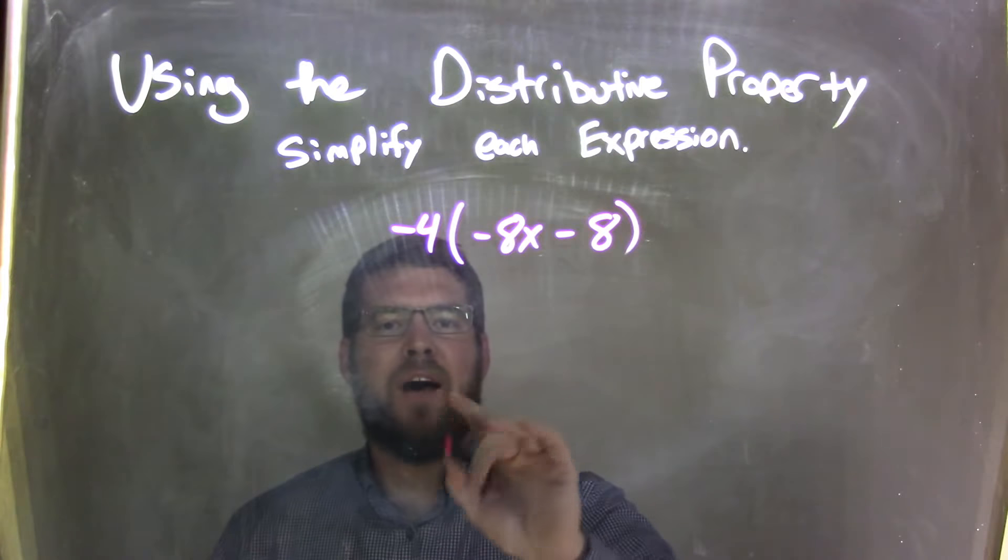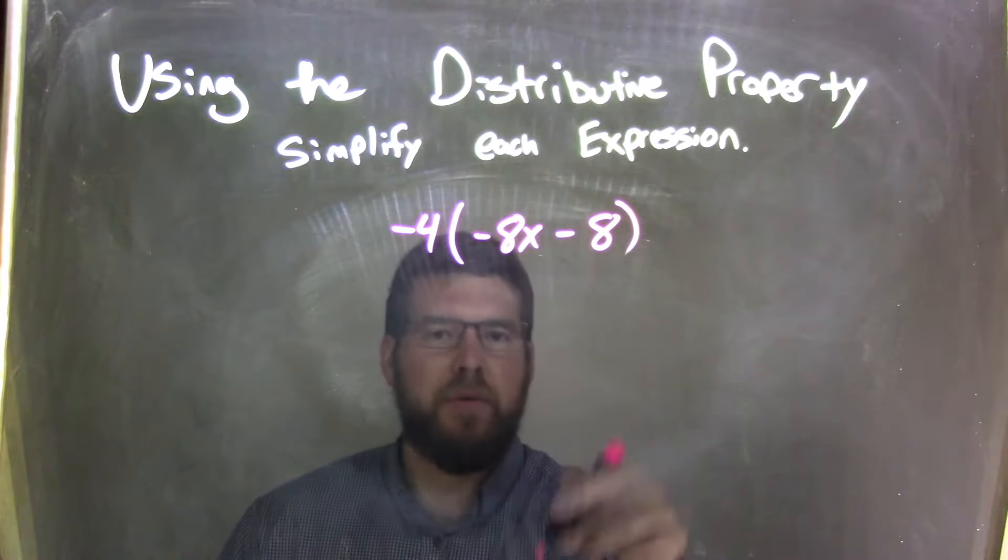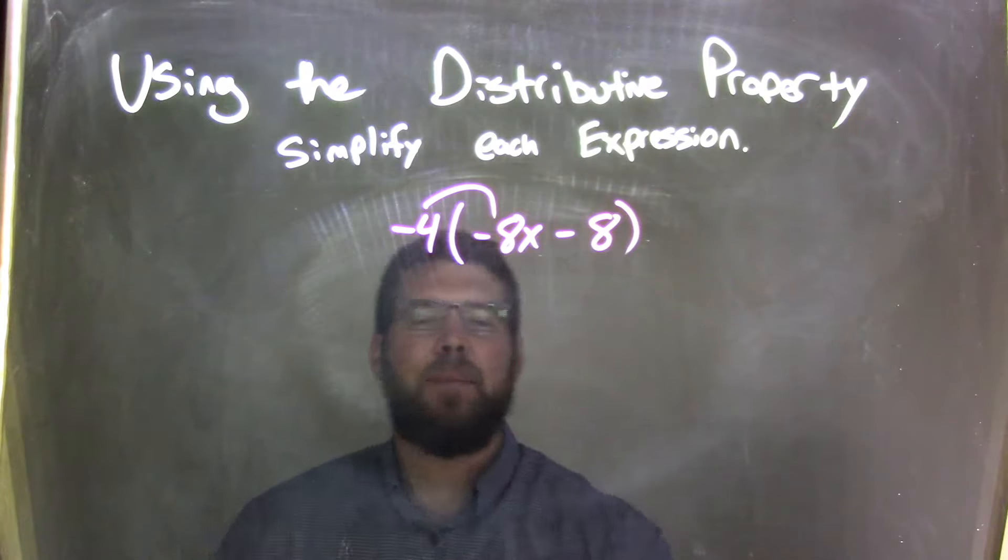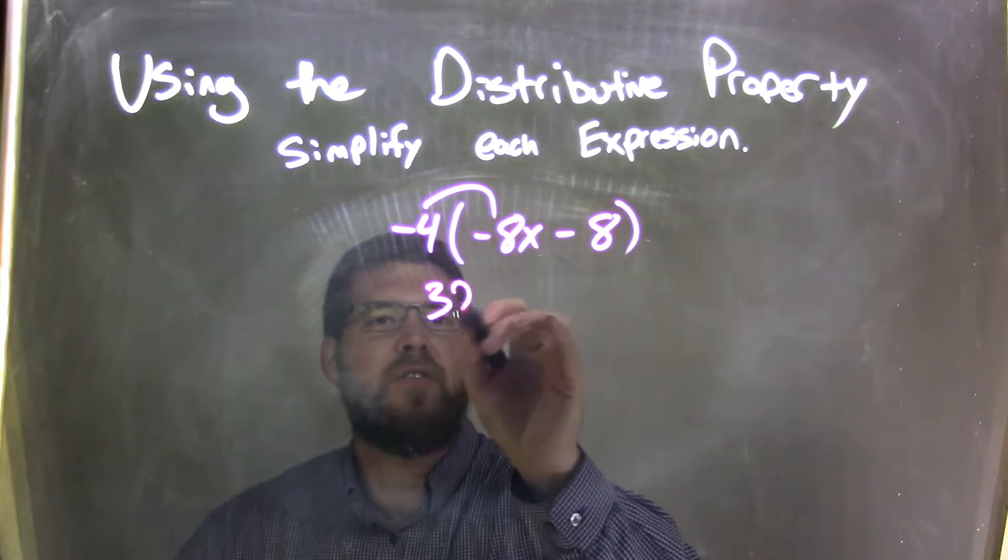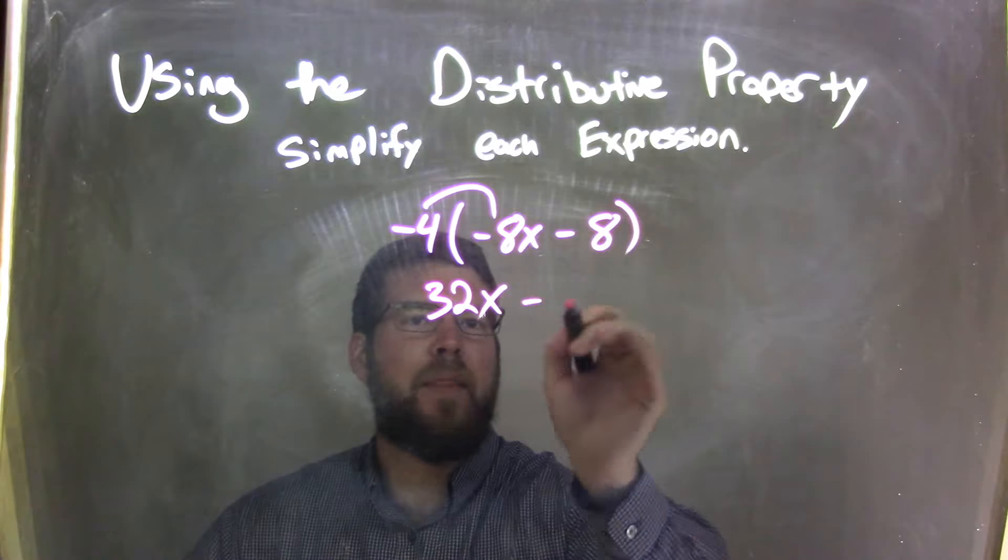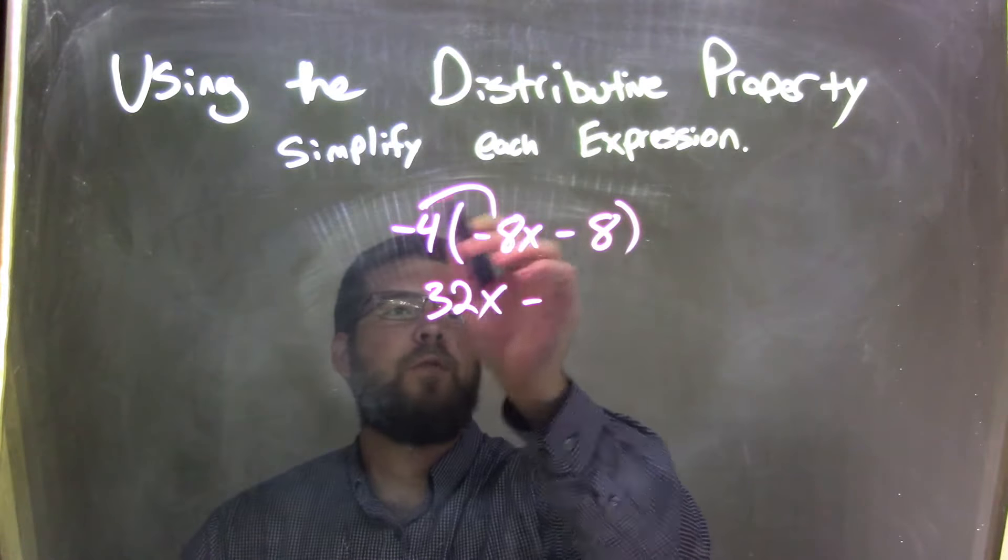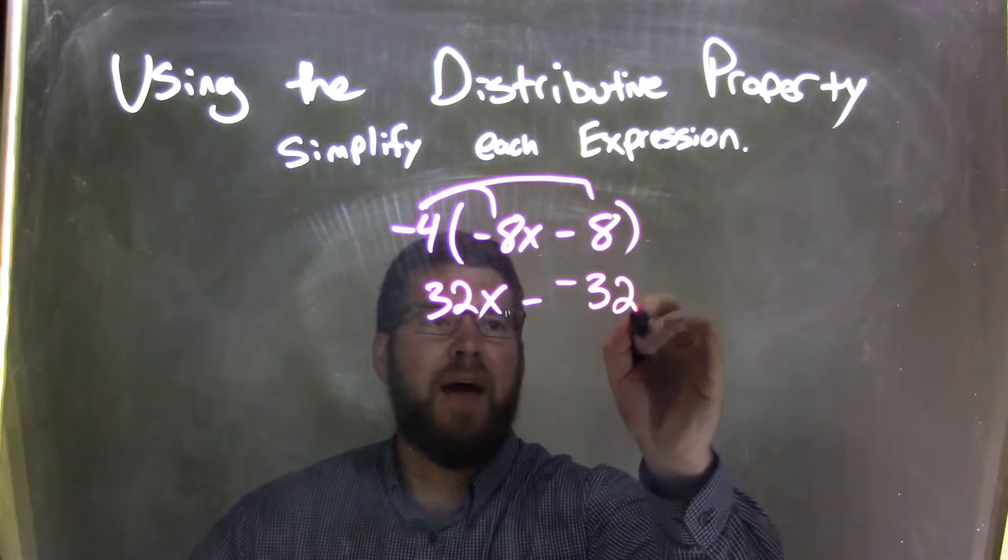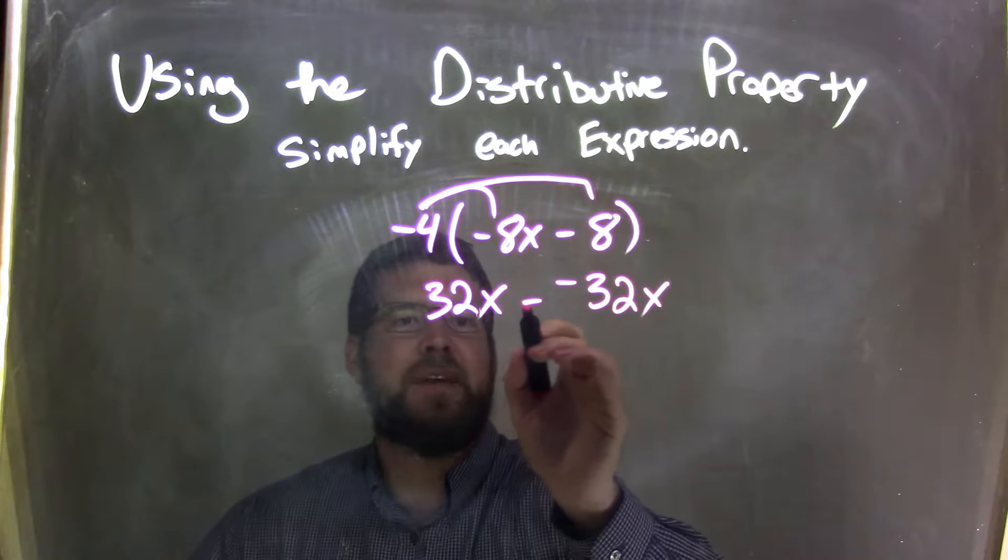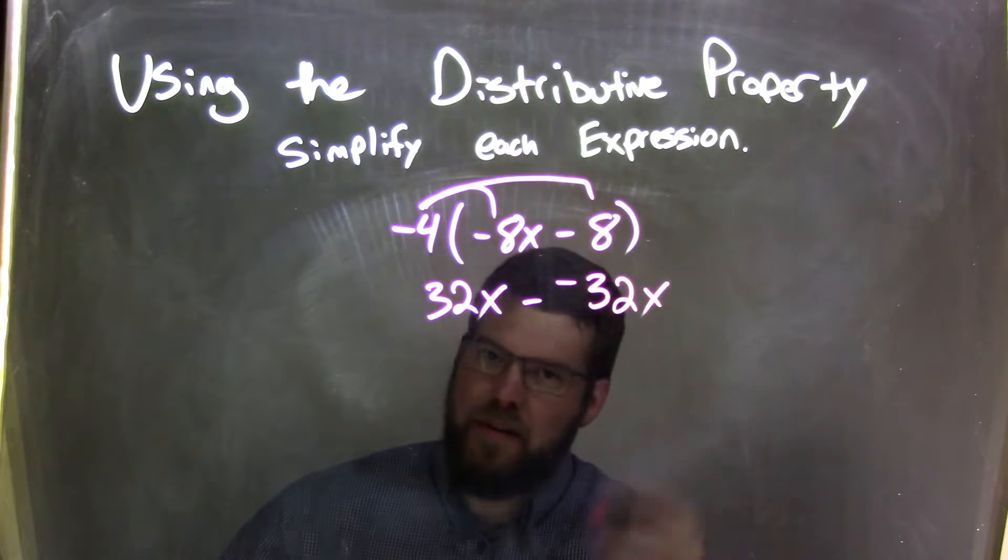So now we have negative 4 on the outside, and we need to multiply that and distribute that in. Negative 4 times negative 8, two negatives make a positive, which is 32x. Bring down the minus sign here. Now we have negative 4 times a positive 8, which is a negative 32x, but since we have subtracting a negative, we know that's going to be a positive.